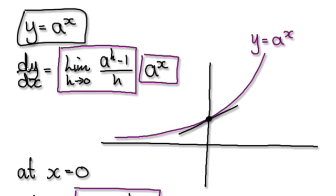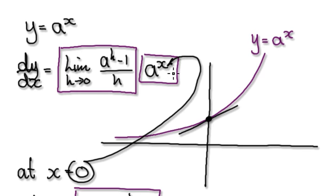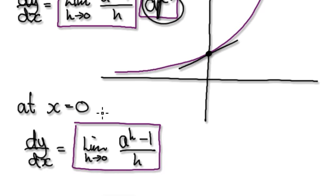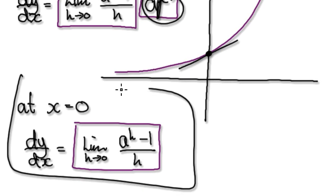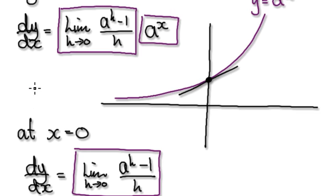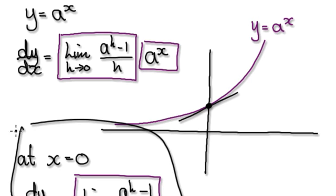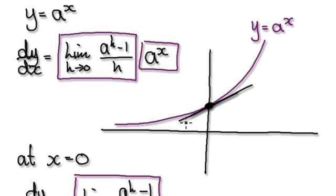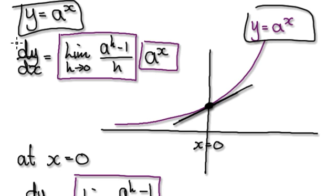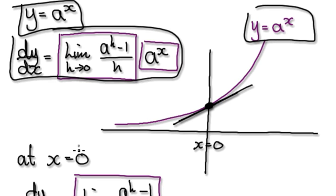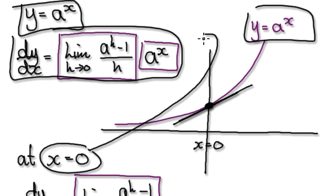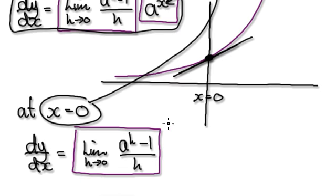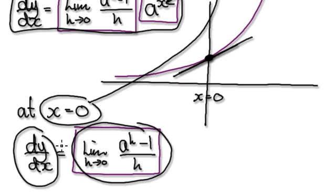We start out with this, differentiate it, and it will give us this. Then at x equals 0, you put 0 into here and this whole thing becomes 1, so dy/dx equals this expression. By doing this step, it really translates to us trying to understand the gradient at x equals 0. This here is your original graph — when you differentiate and work out the gradient at x equals 0, putting 0 in gives you what you are trying to understand.